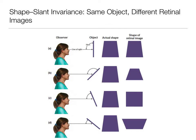Here's another example of shape-slant invariance. We have the object slanted in different ways, and we see the actual object shape stays the same. We can see differences in the retinal image, but because we have shape-slant invariance, we're going to perceive that object as still having the same shape.